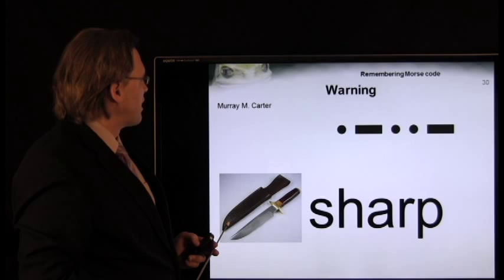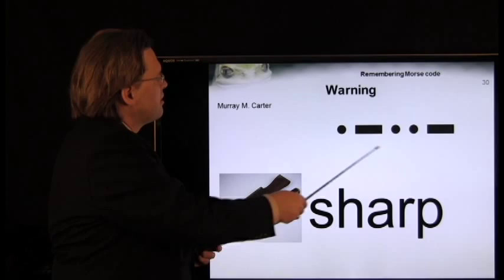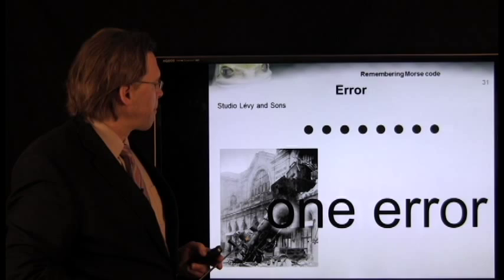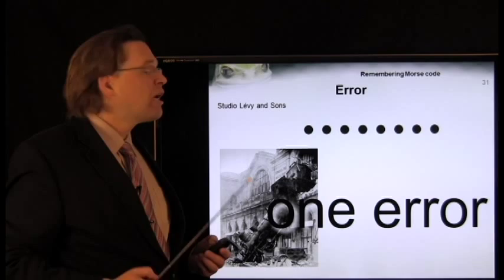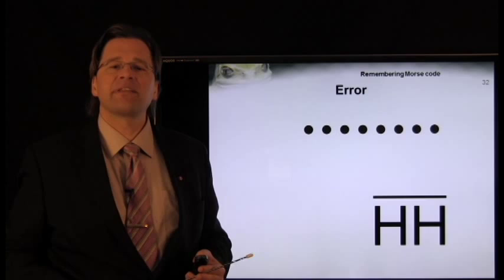There's two others that we should look at. A warning is denoted by this Morse code sequence, and you can remember it by the word sharp. An error in Morse code is brought to the attention of the receiver by sending eight dots. So you can either remember one error, or you can just remember that this is just essentially two H's juxtaposed.